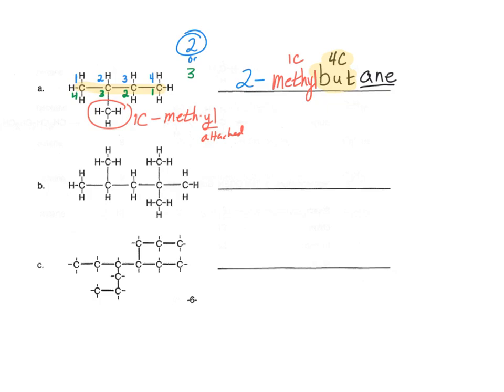Now let's look at compound B. We notice that this is a hydrocarbon with all single bonds, so this is an alkane. The ending will be -ane. Next, we look for the longest continuous carbon chain — in this case we have five, so that is pentane.